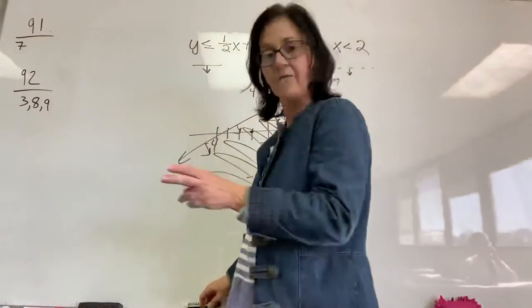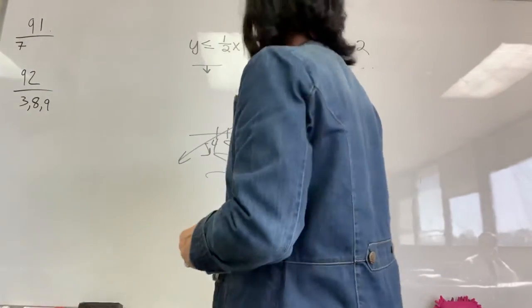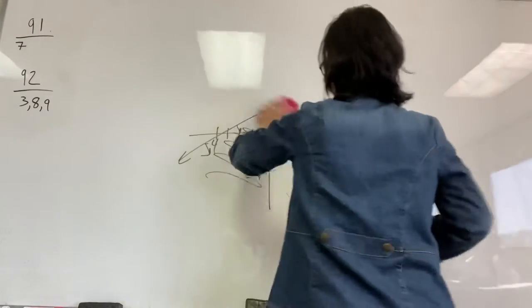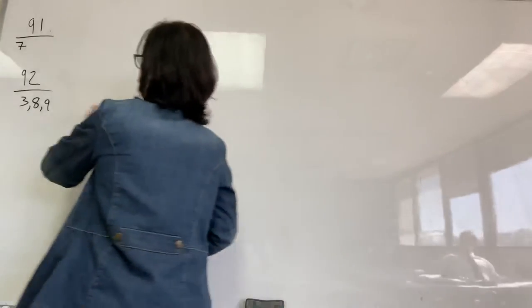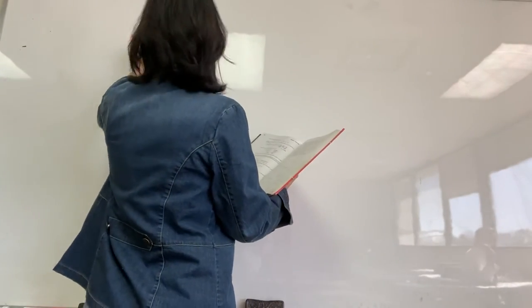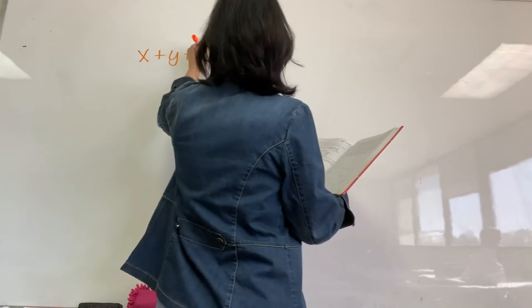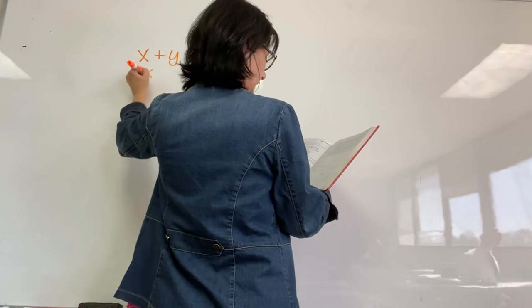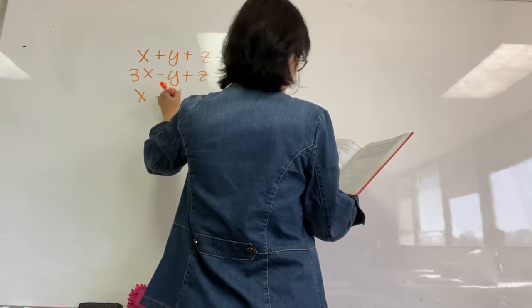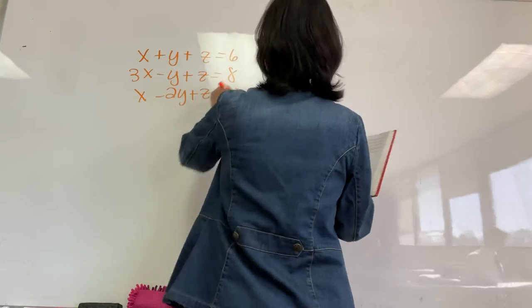All right. 8 and 9. Several people have had questions on these with the three equations. All right. Let's look at number 8. All right. It's X plus Y plus Z equals 6. 3X minus Y plus Z equals 8. X minus 2Y plus Z equals 0.